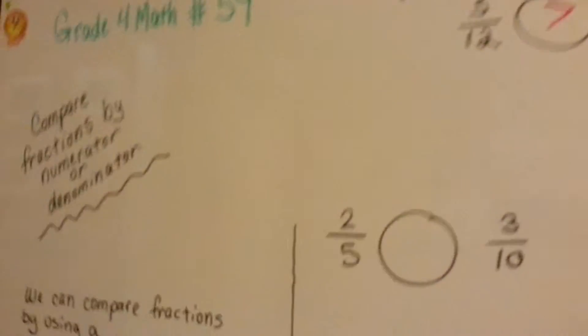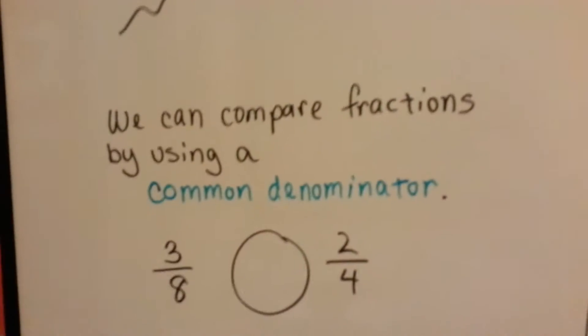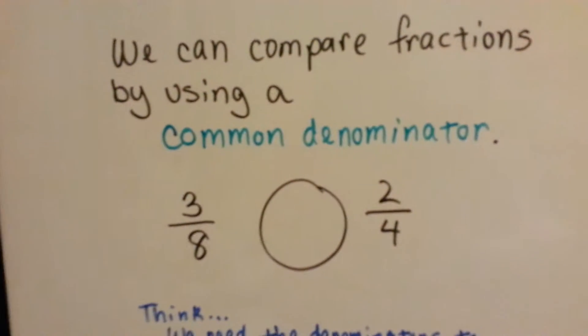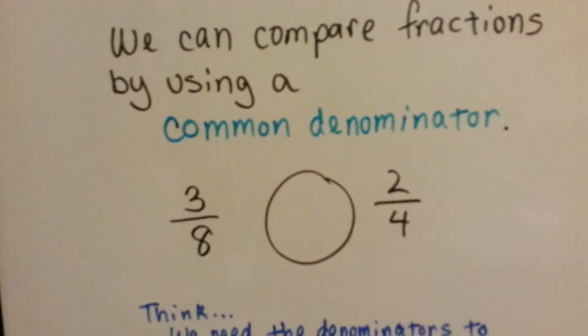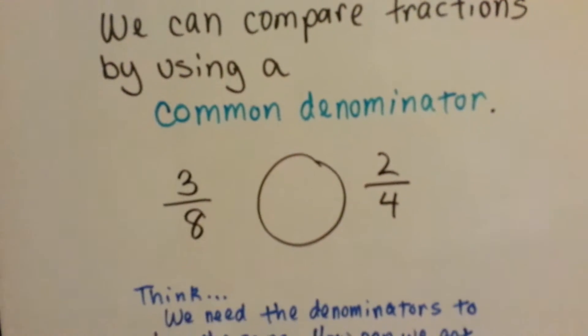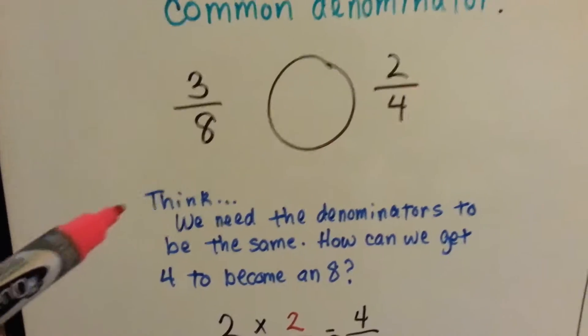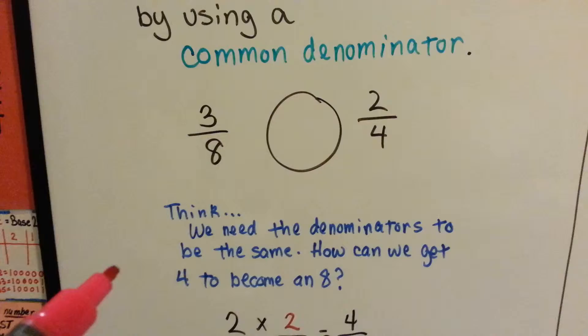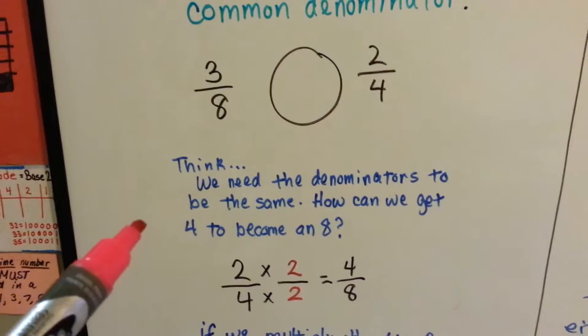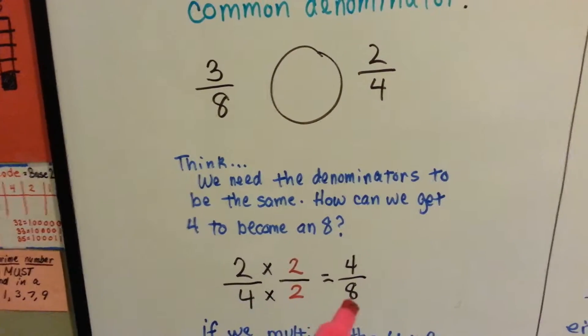But what happens when we compare fractions and we want to do it by common denominators, but the denominators are not common. They're not the same. 3 eighths compared to 2 fourths. Well, here's what we do. We think we need the denominators to be the same, and how can we get 4 to become an 8? Well, 4 times 2 is 8.